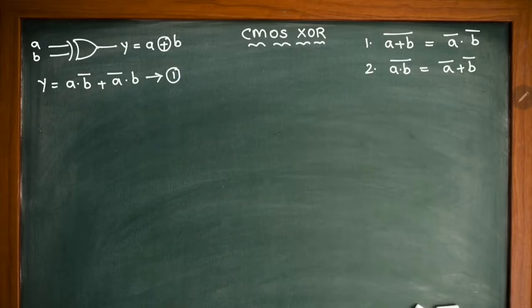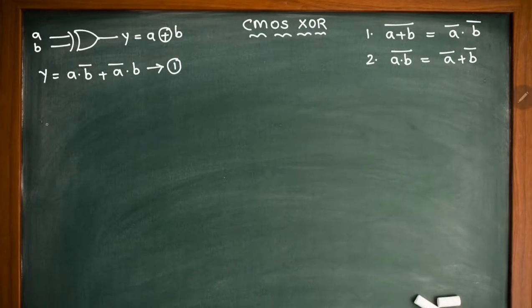So here what I will do is I will try to apply bars two times so that we can cancel out one from it. So again write the same Boolean expression. Generally we know a rule like if two bars are there we can cancel them out. So the same thing I will apply here.